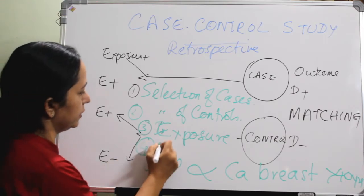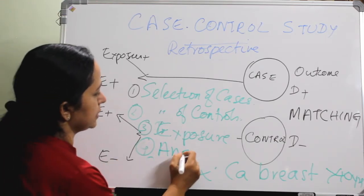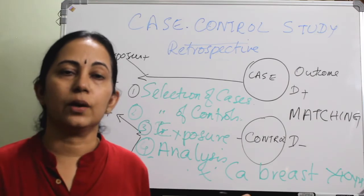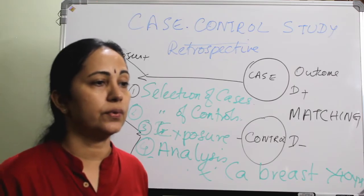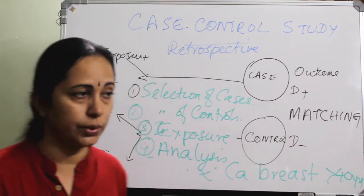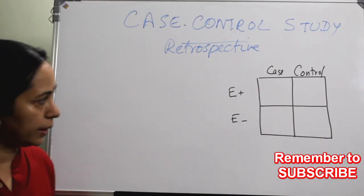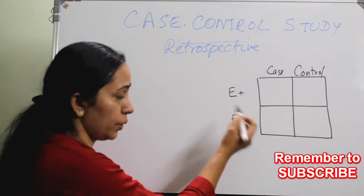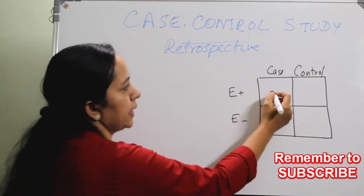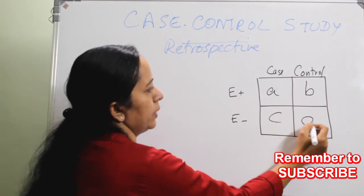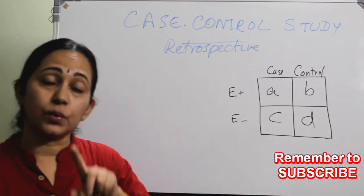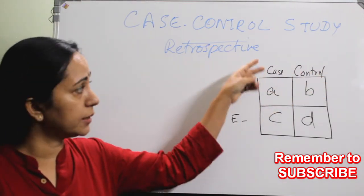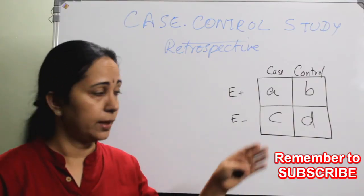The fourth element is analysis. Here we are finding out the odds ratio. Similar to that of a cohort study, you have to make a 2x2 table. In this table we have exposed, unexposed, cases, and controls. But in cohort study we put it as diseased and non-diseased, whereas here the case and control is already known and we are going back.